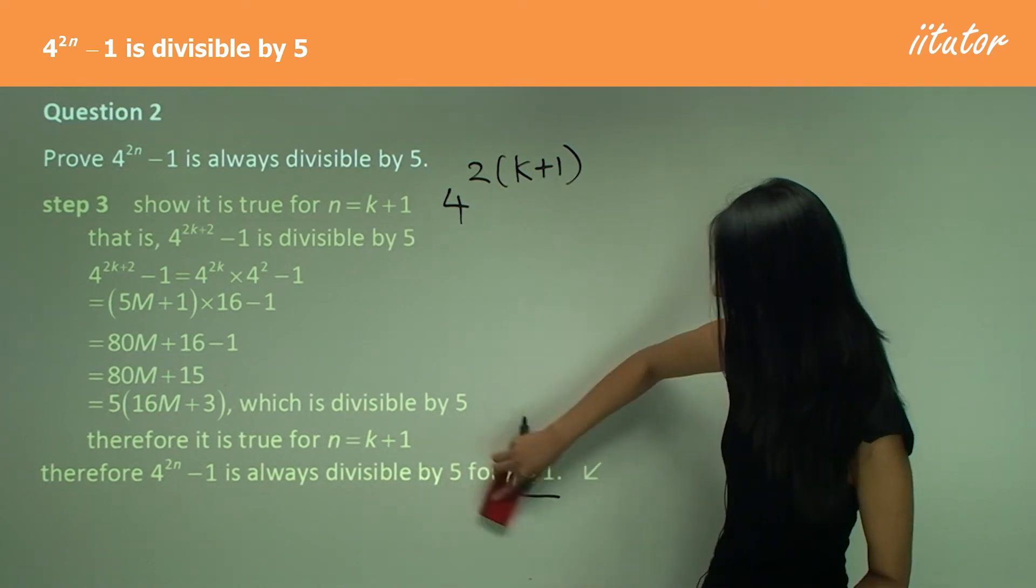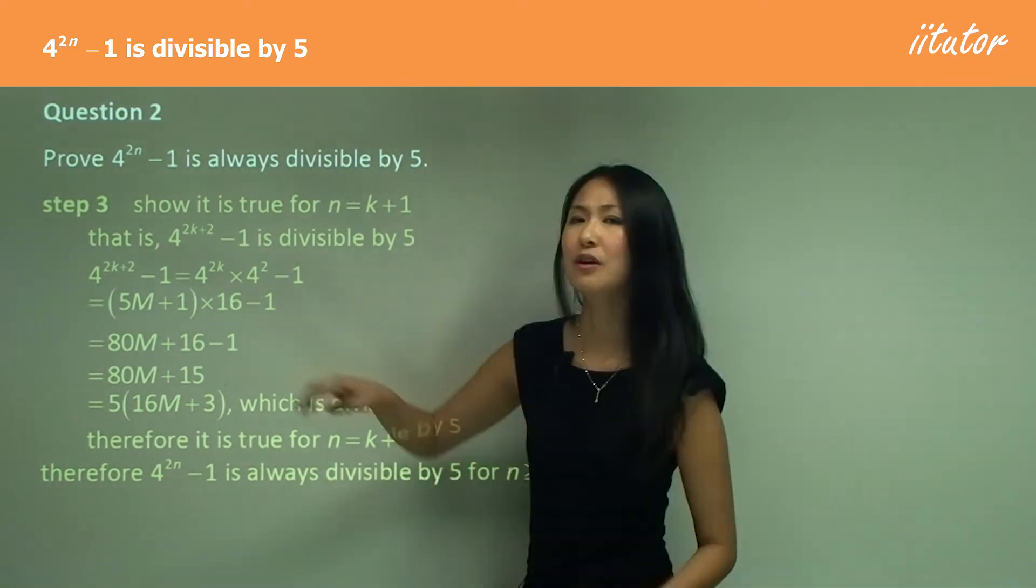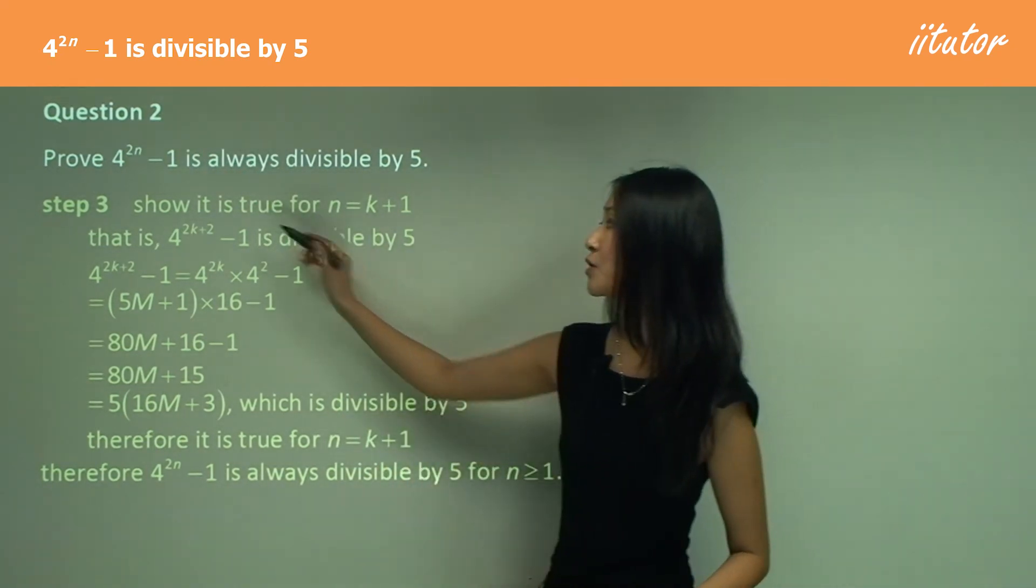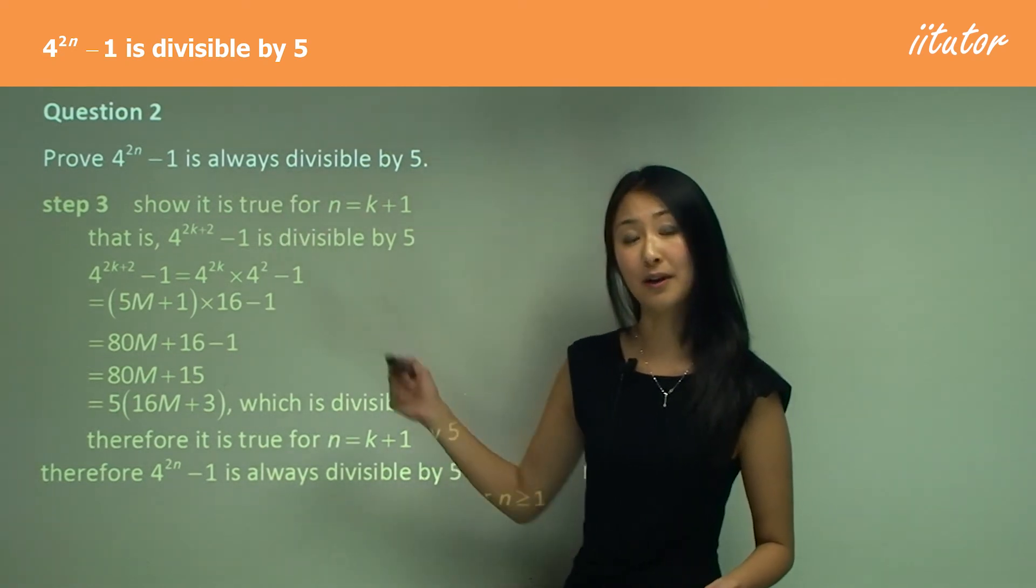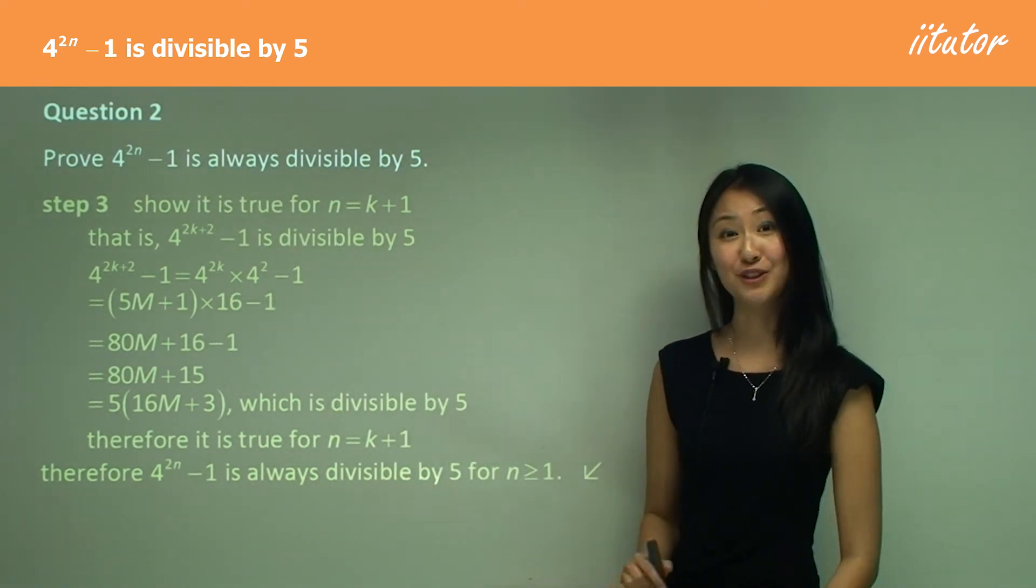So you can see here that when we have a multiple index, all that happens is that when you multiply it by k plus 1, you just have to make sure that you multiply the whole k plus 1 by the coefficient in front. So just be careful to do that.